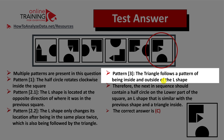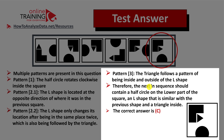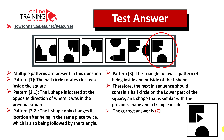The last pattern is the pattern of the small triangle, which follows the pattern of being inside and outside of the L-shape. Therefore, the next item in the sequence should contain a half circle in the lower part of the square, an L-shape similar to the previous shape, and the triangle inside. So the correct answer is choice C. Hopefully you understand what to look for in similar questions on the test.